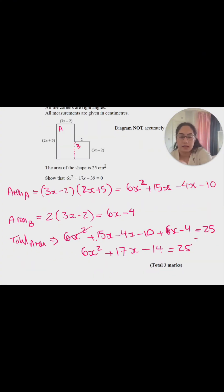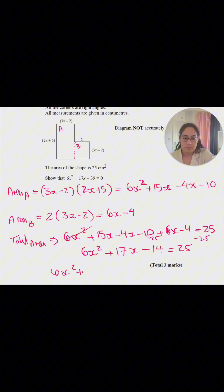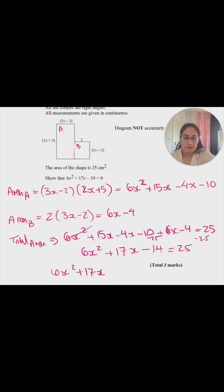If we subtract 25 from both sides so that we can bring 25 to this side and make the equation equal zero, that would be 6x² + 17x - 14 - 25 gives us -39, and we have zero on this side.